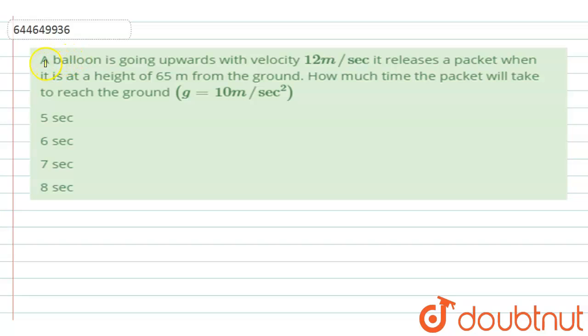The given question is: a balloon is going upwards with velocity 12 meter per second. It releases a packet when it is at a height of 65 meters from the ground. How much time the packet will take to reach the ground?